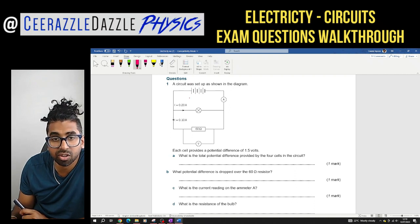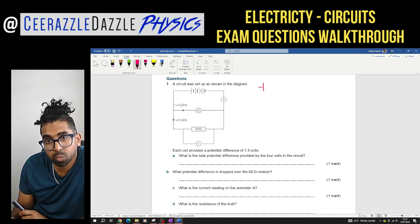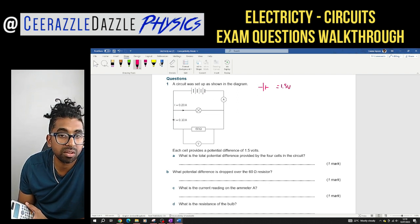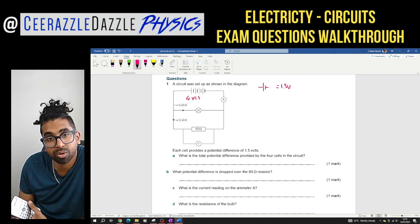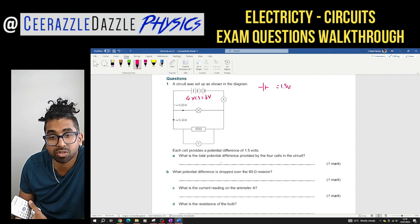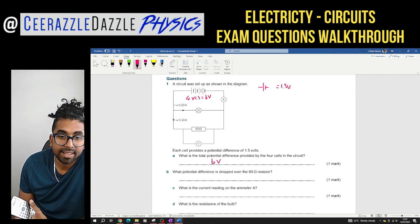A circuit was set up as shown in the diagram. We've got the circuit over here. Each cell provides a potential difference of 1.5 volts. What is the total potential difference provided by the four cells in the circuit? So each one of the cells, this is one cell. If we know that's going to be 1.5 volts you've got 1, 2, 3, 4. Well obviously it's going to be 4 times 1.5. 4 times 1.5 is going to be 6 volts coming in. So that is 6 volts. Excellent. So we now know that's 6 volts.